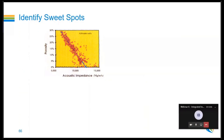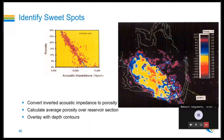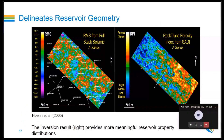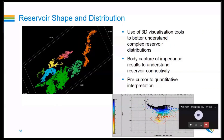Seismic inversion also helps identify sweet spots and define reservoir geometry. For example, a structure initially believed to be fully hydrocarbon-charged was shown by inversion to contain hydrocarbons only in part — with an oil-water contact below which there was no hydrocarbon. On another example, RMS amplitude of full-stack seismic shows some bodies vaguely, but porosity derived from inversion delineates reservoir geometry much more clearly, showing channels and sedimentary bodies in detail.